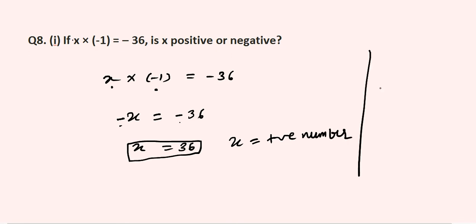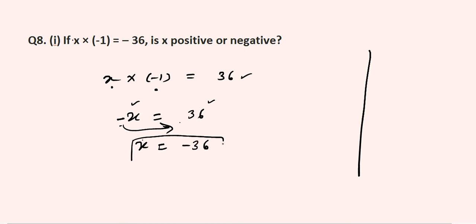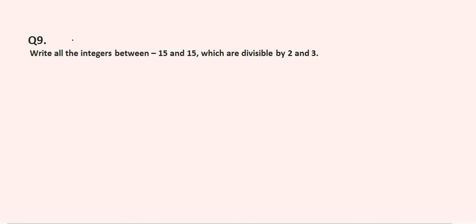For the second part of question 8: x into minus 1 equals plus 36. So minus x equals 36. There is only one negative on the left-hand side, so transposing it to the right-hand side gives x equals minus 36.